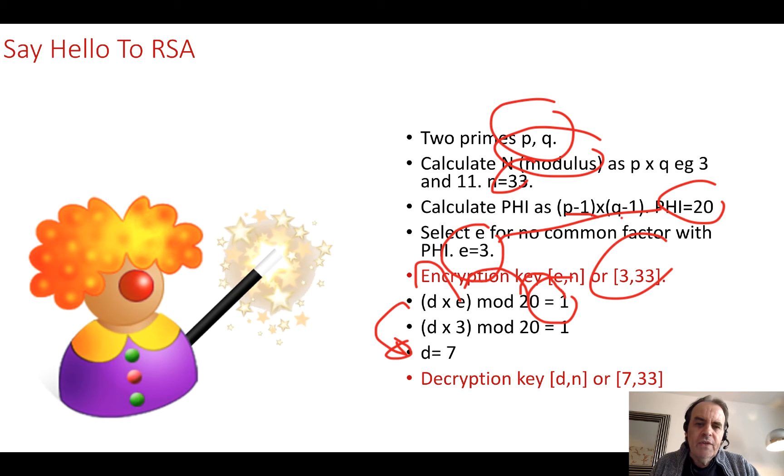Now we've got to calculate D times E mod of 20, phi is equal to 1. There are various ways we can do that, but we can calculate that as 7 because 3 times 7 is 21, take mod 20 and we end up with 1. So there's our decryption key.